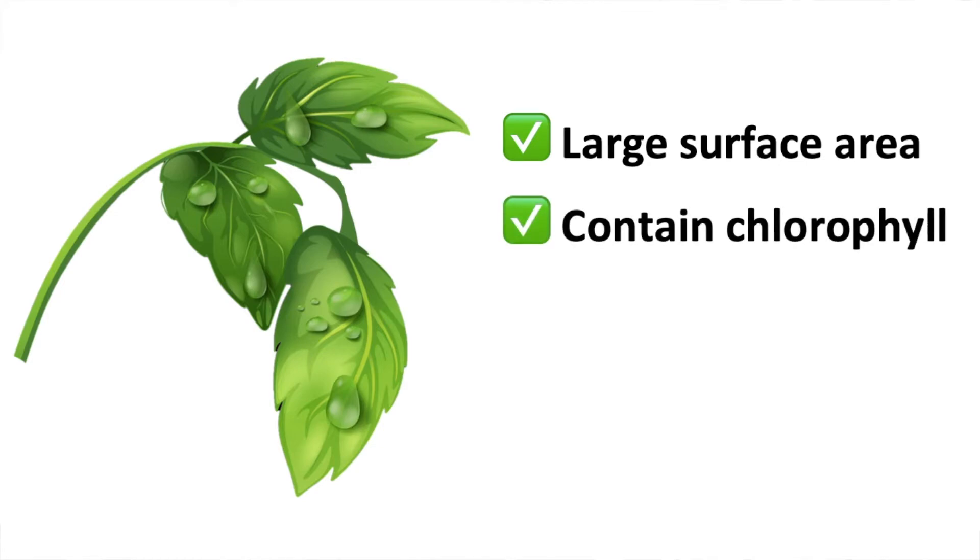Secondly, leaves are green due to the chlorophyll in the chloroplasts. This helps them to absorb sunlight.